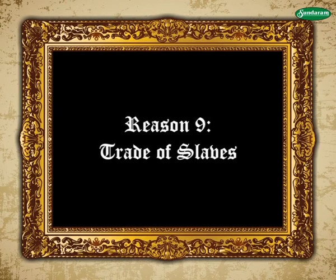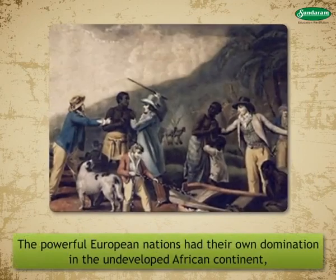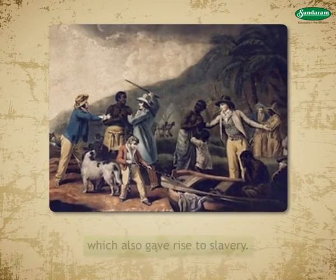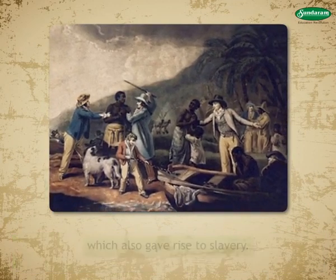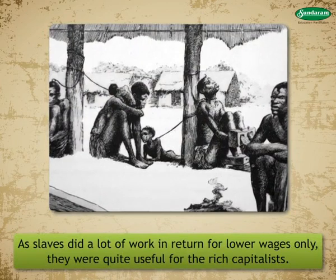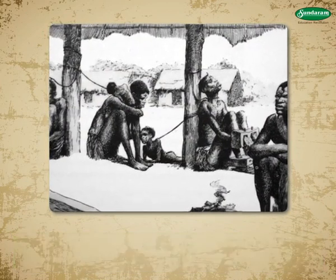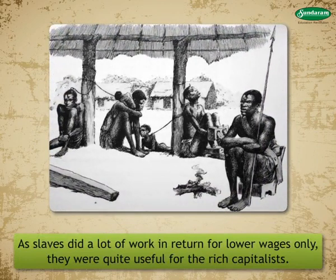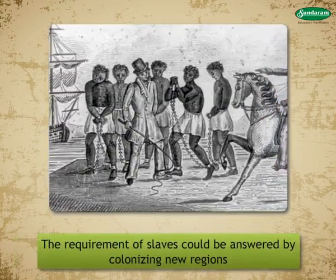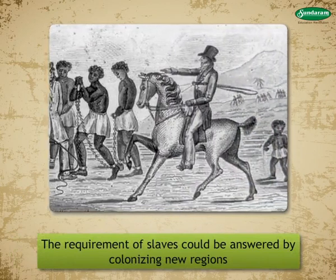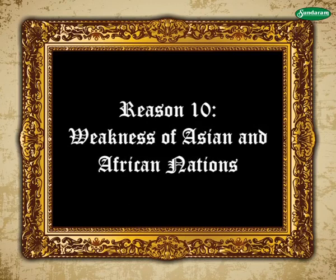Reason 9 — Trade of Slaves: The powerful European nations had their own dominations in the undeveloped African continent, which also gave rise to slavery. As slaves did a lot of work in return for lower wages only, they were quite useful for the rich capitalists. Thus, the trade of slaves came to have tremendous importance. The requirement of slaves could be answered by colonizing new regions, which became another reason for the growth of imperialism.